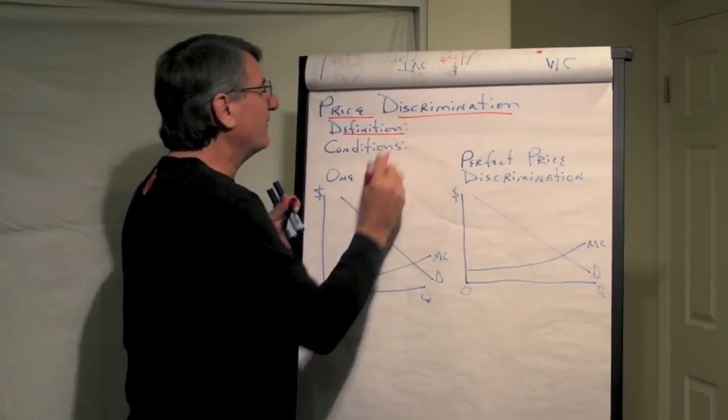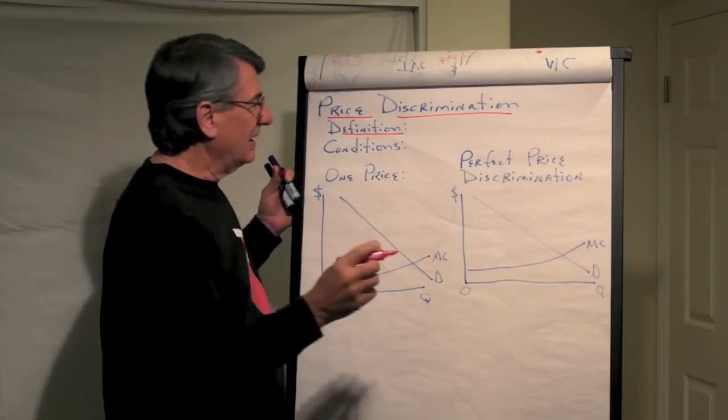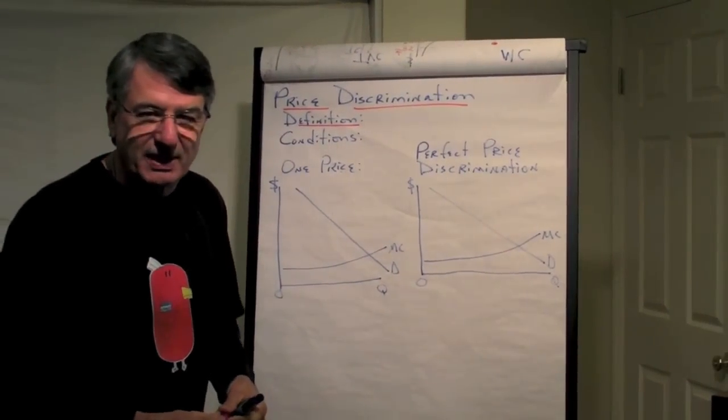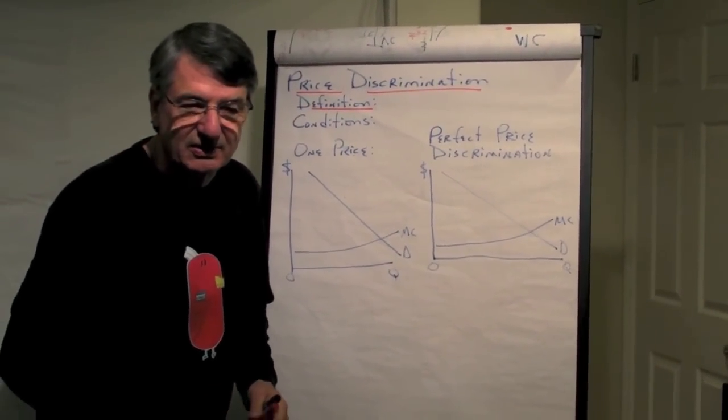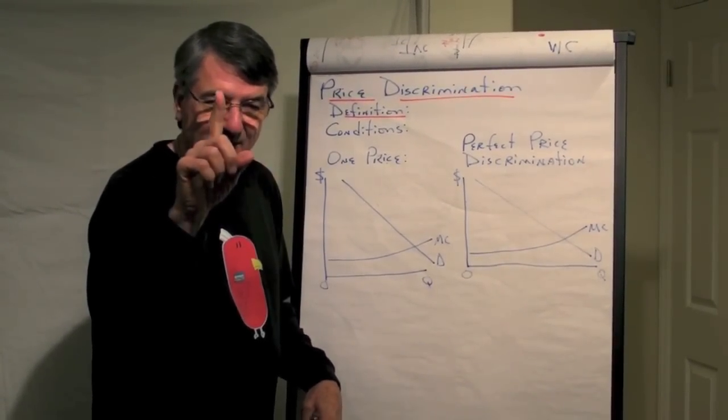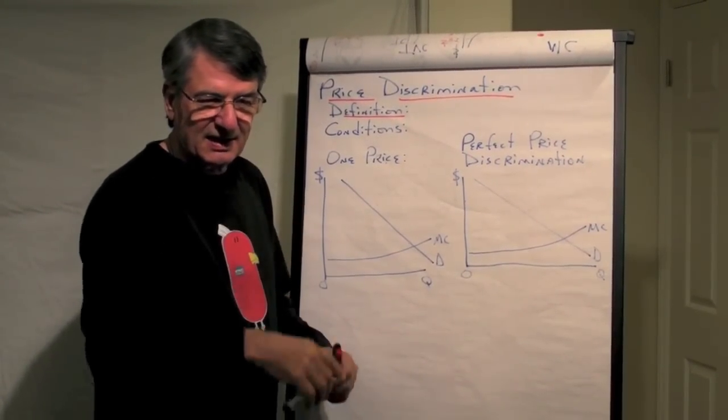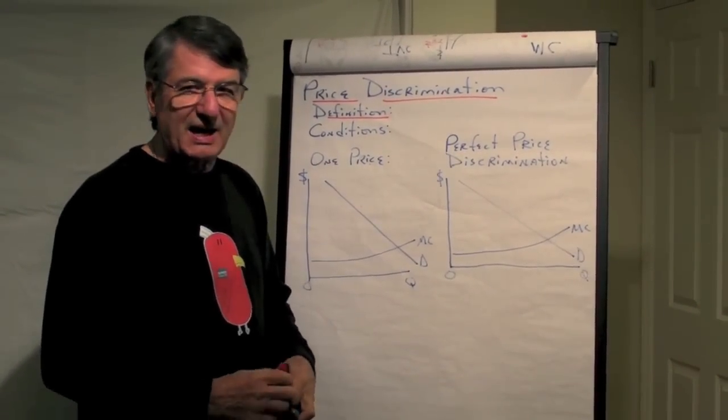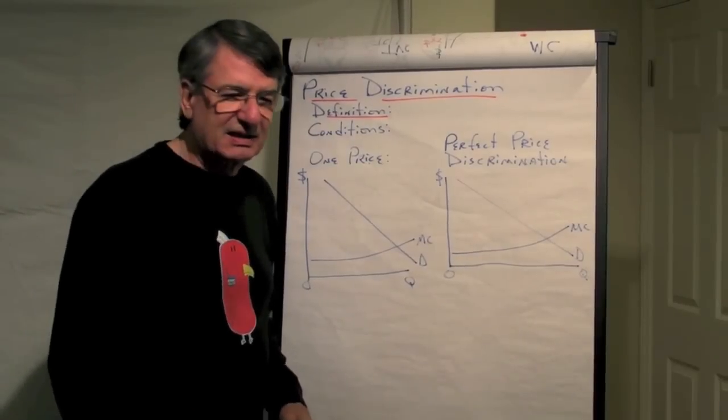Well, what's the definition of price discrimination? The definition of price discrimination is charging different prices to different customers for the same item. And there's a caveat. What is it? That the price differences may not be justified by cost differences.